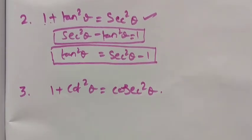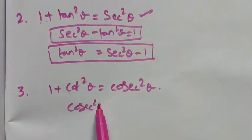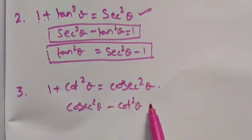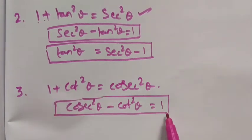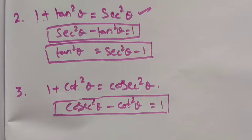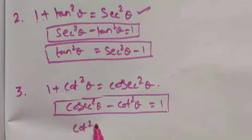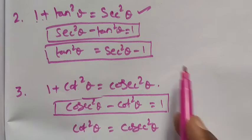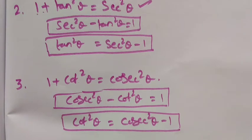For the third identity, I take cot square theta to the other side: cosecant square theta minus cot square theta is equal to 1. And also, taking 1 to the other side, cot square theta is equal to cosecant square theta minus 1. We can rewrite it in that format.